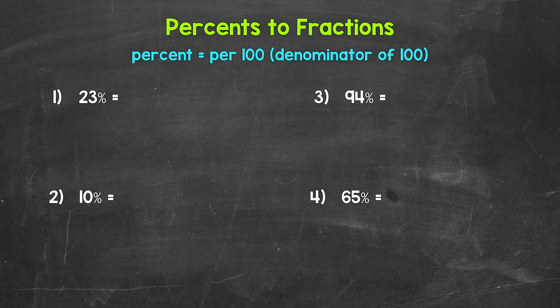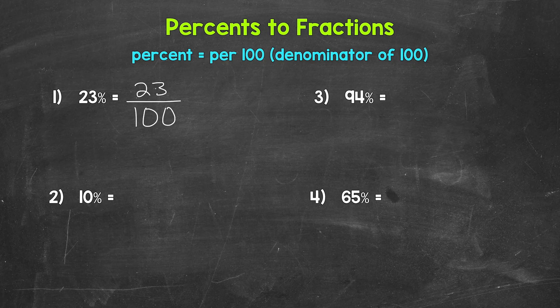Once we have the fraction, we can simplify if possible. For 23%, we write this as 23 over 100 — 23 hundredths. That's our fraction. This fraction cannot be simplified; the only common factor between 23 and 100 is one, so we are done. 23% equals 23 over 100 as a fraction, 23 hundredths.